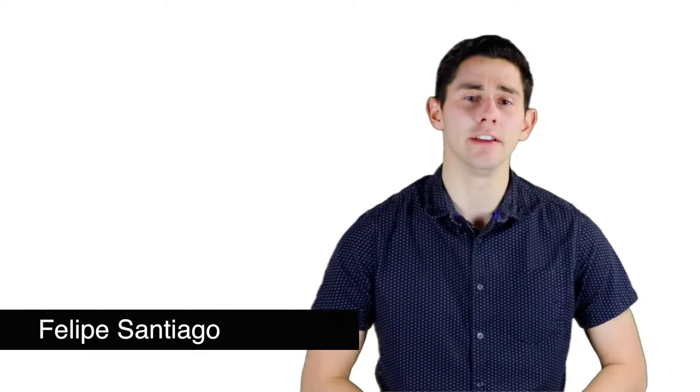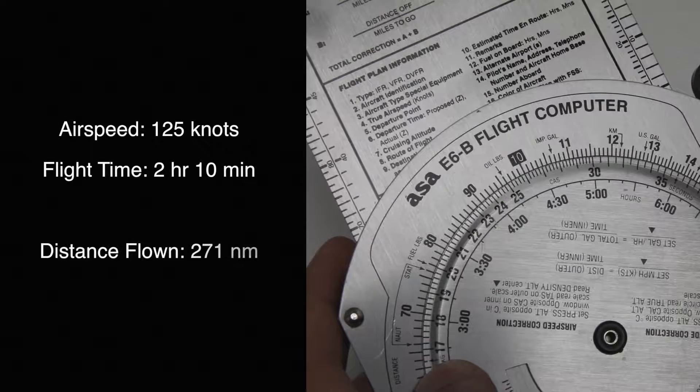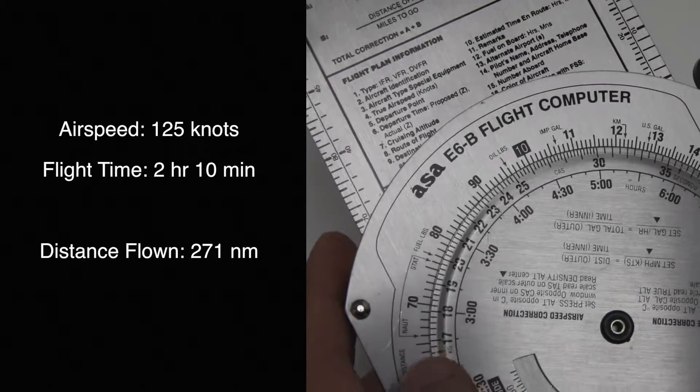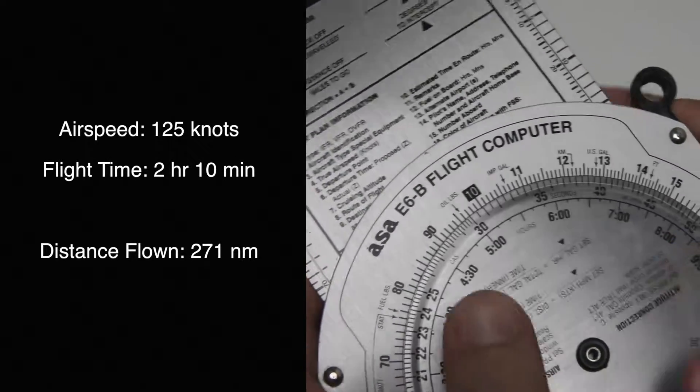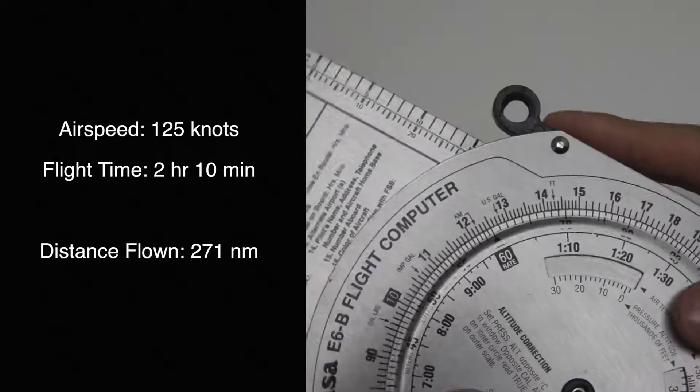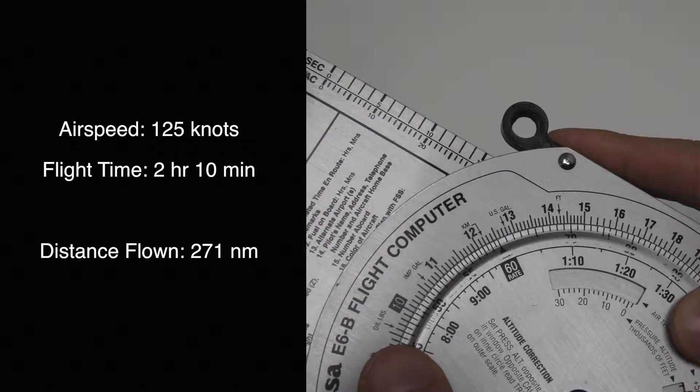Welcome back aviators, let's take a look at our E6B. To calculate our distance flown, we're going to set the rate to 125 knots.